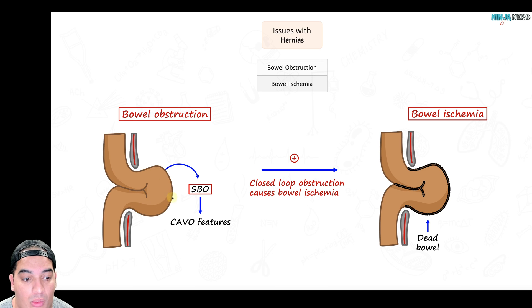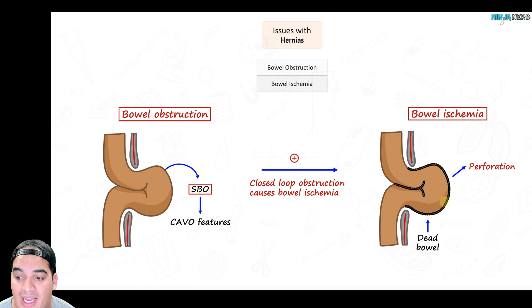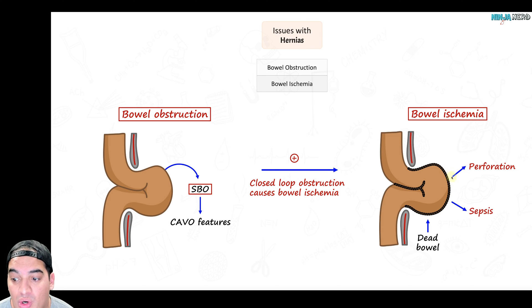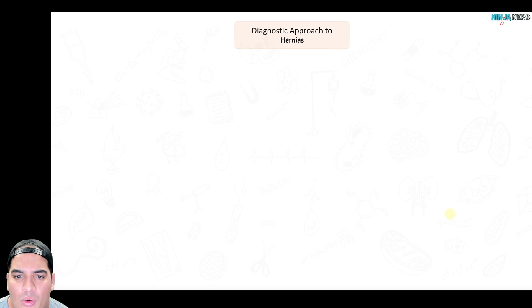Closed loop obstructions pinch the arteries at both ends, resulting in no arterial blood flow to that portion of the small bowel. This can lead to severe bowel ischemia, indicated by an elevated lactate level on labs. If not reversed, the bowel can become infarcted, perforate causing pneumoperitoneum, and lead to peritonitis and sepsis.